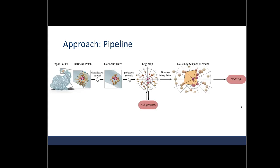So to recap, here's the whole pipeline. We start with a point cloud. Classification network reduces patches sampled from that point cloud to geodesic patches, which are projected to log maps that are aligned. The log maps are aligned. And Delaunay triangulation is used to create Delaunay surface elements, which are guaranteed to be manifold within a given patch. And then hopefully the voting process at the end will maximize the manifoldness of the entire mesh.